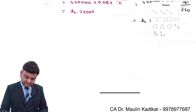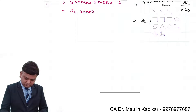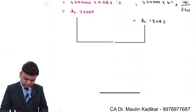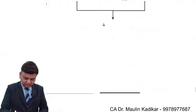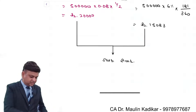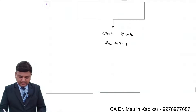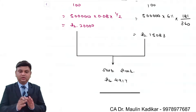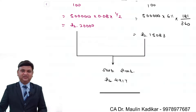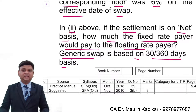We are now required to compute the net of both payments. The net amount is 20,000 minus 15,083, which equals Rs. 4,917. Since the fixed rate of interest is higher, this is the net amount the fixed rate payer is required to pay to the floating rate payer.